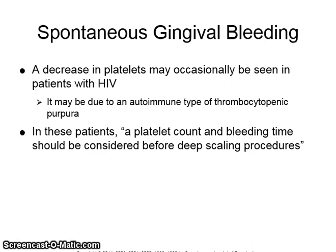Spontaneous gingival bleeding: A decrease in platelets may occasionally be seen in patients with HIV, and may be due to an autoimmune type of thrombocytopenic purpura. In these patients, a platelet count and bleeding time should be considered before deep-scaling procedures.